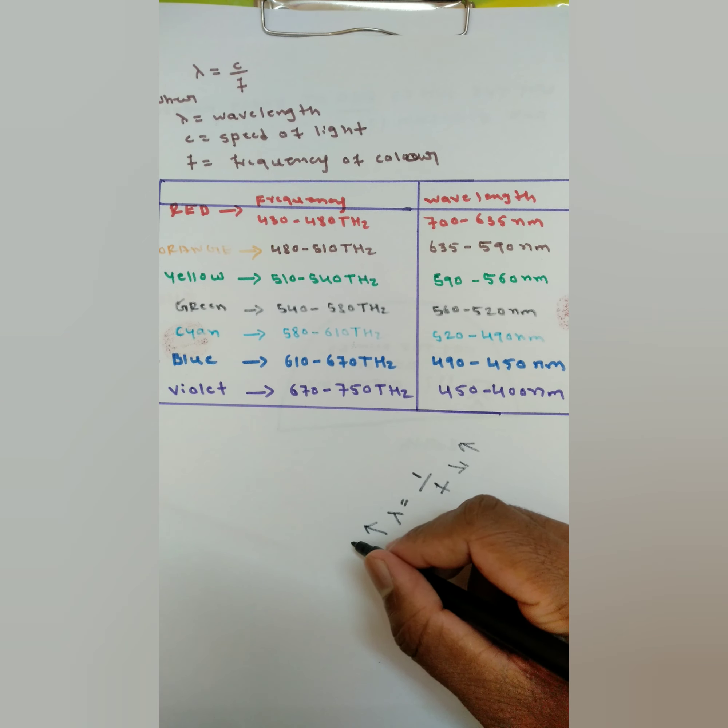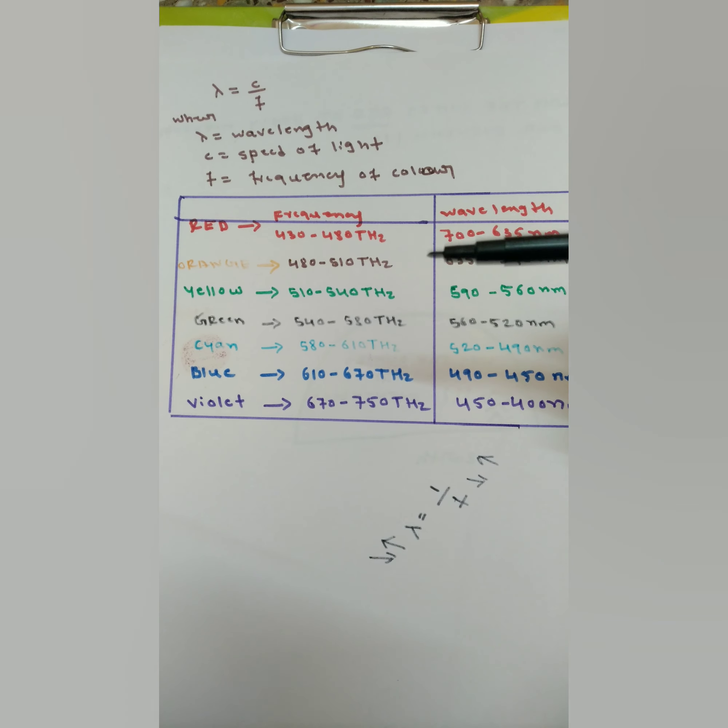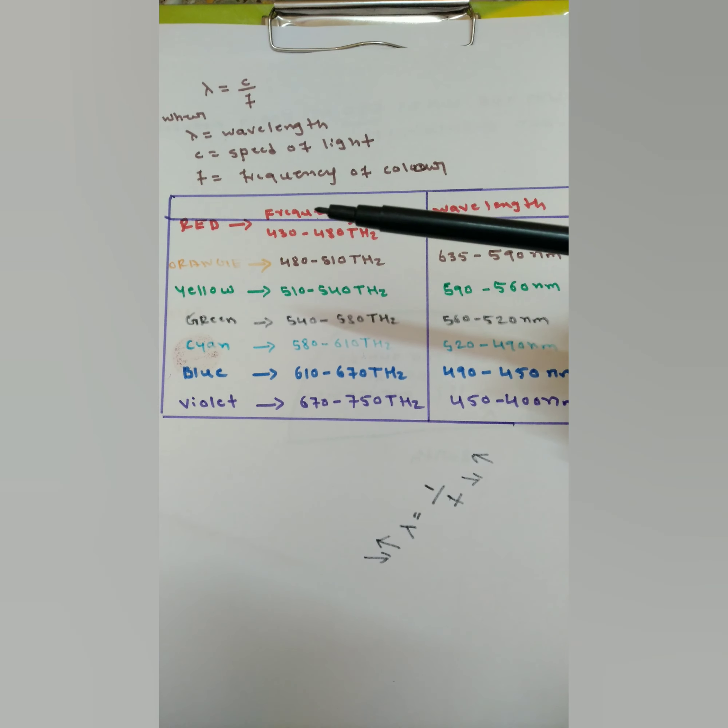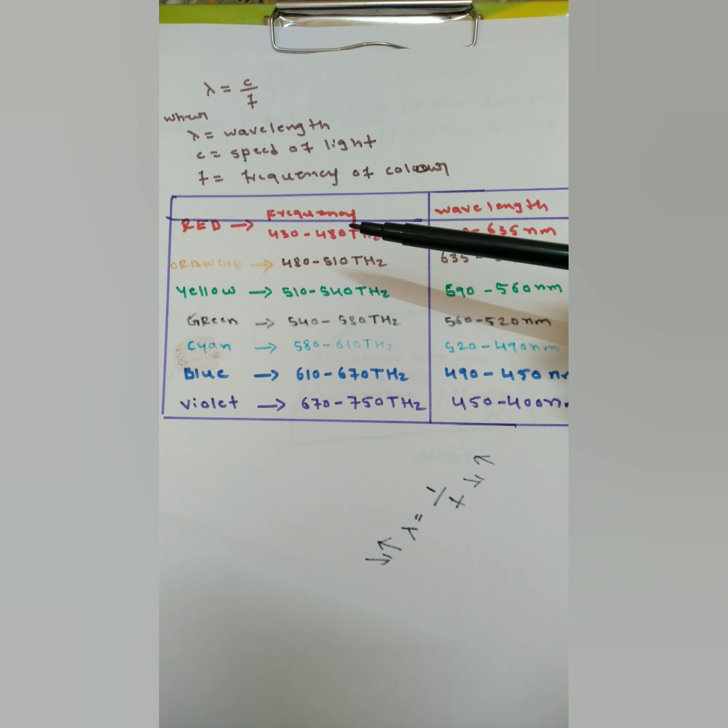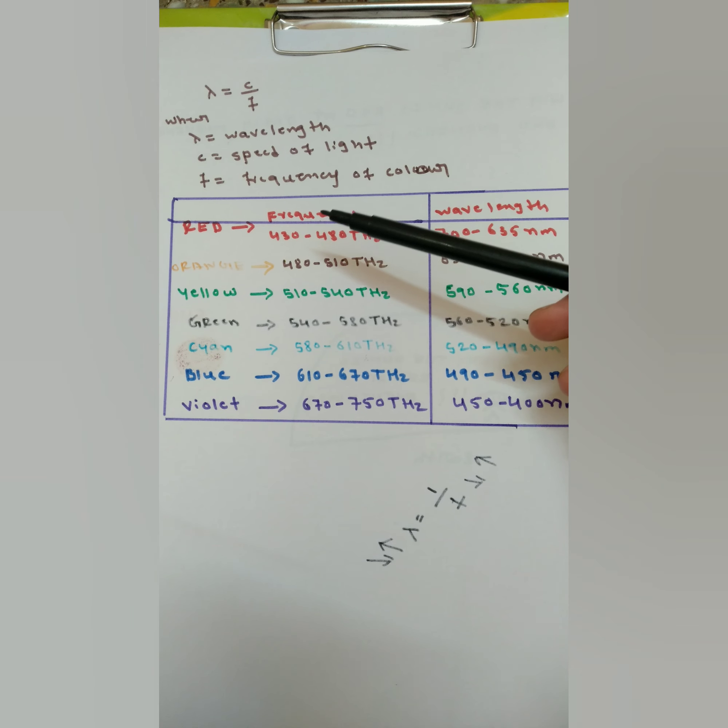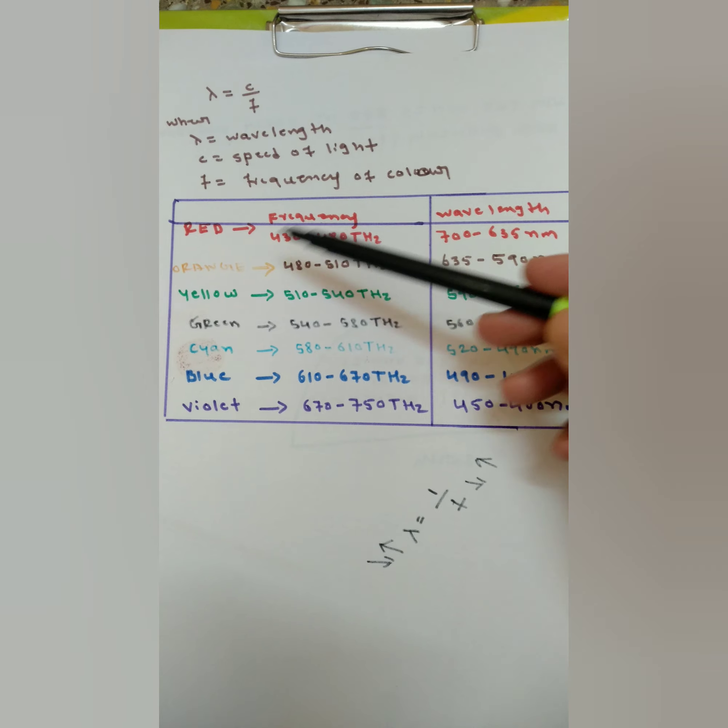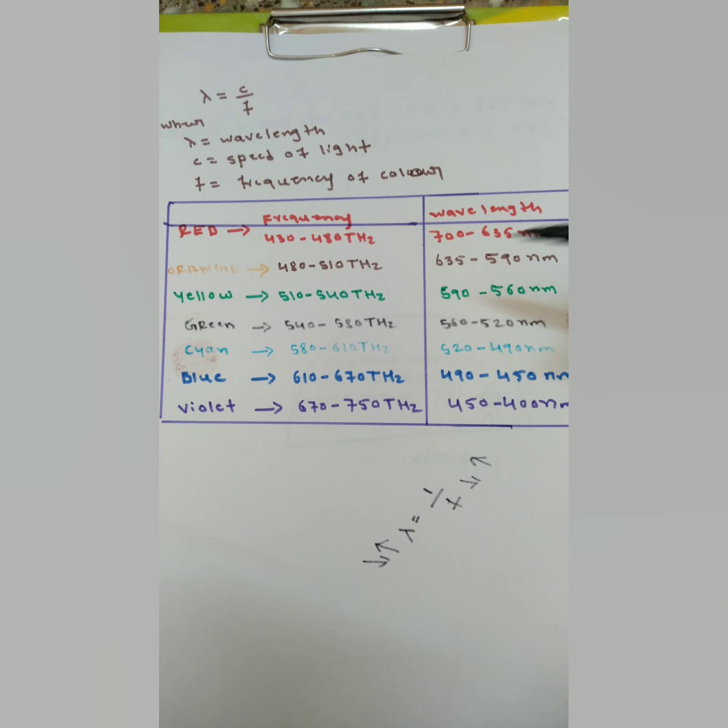The reason behind the red appearance of the sun is that colors with higher frequency have smaller wavelength, and colors with lower frequency have larger wavelength. For red, 430 to 480 terahertz is the frequency, so its wavelength is greater at 700 to 635 nanometers.